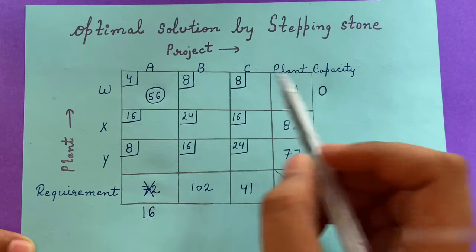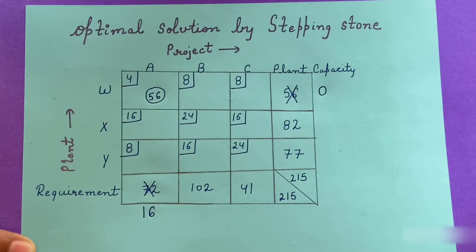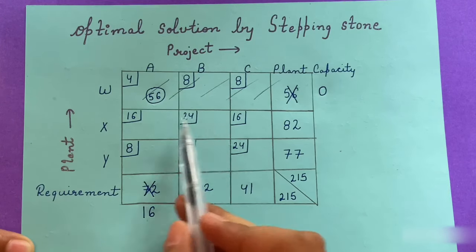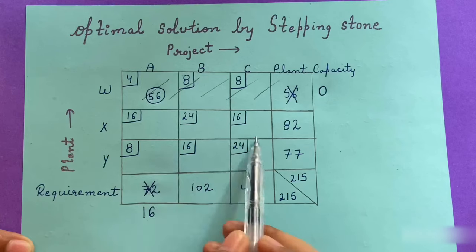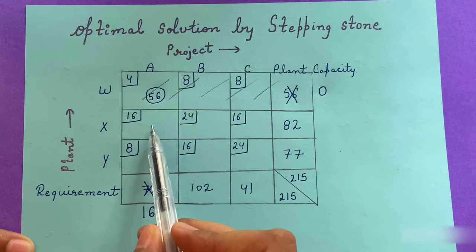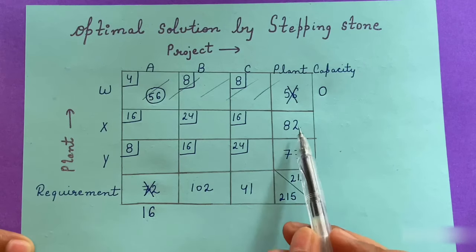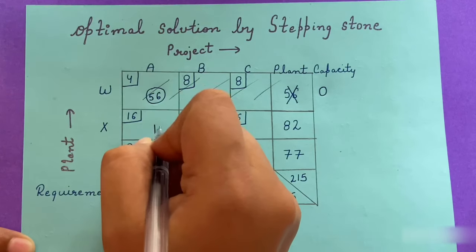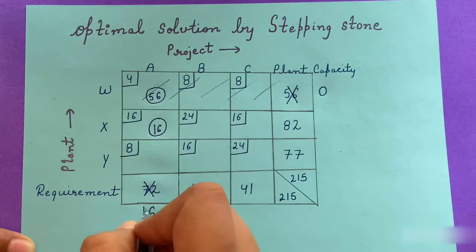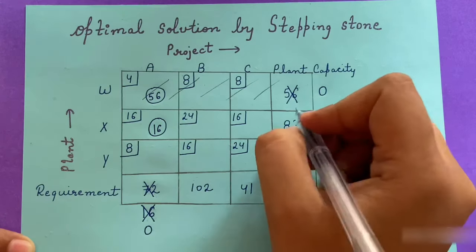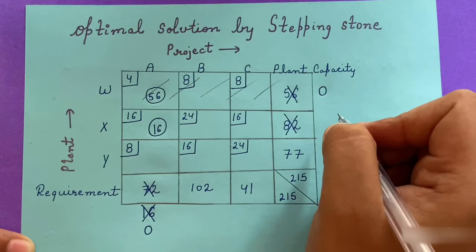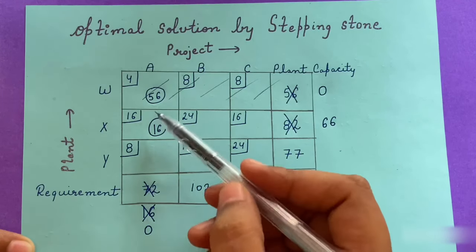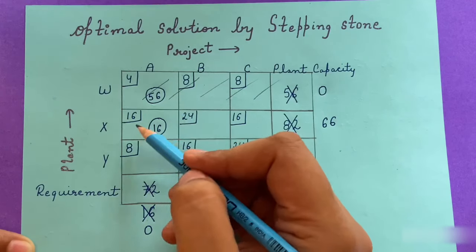Since the plant capacity becomes 0, this row is cancelled out. Now in the remaining matrix, the northwest corner has a requirement of 16 units and a plant capacity of 82 units. The minimum is 16, so we supply 16 units here. The requirement goes to 0 and the plant capacity changes to 66 units.